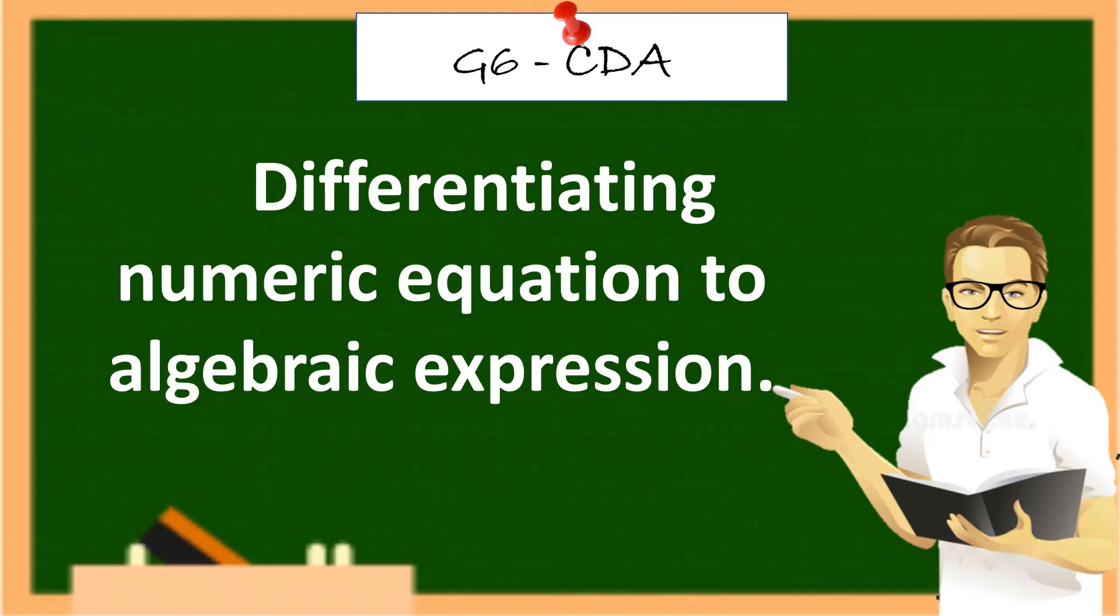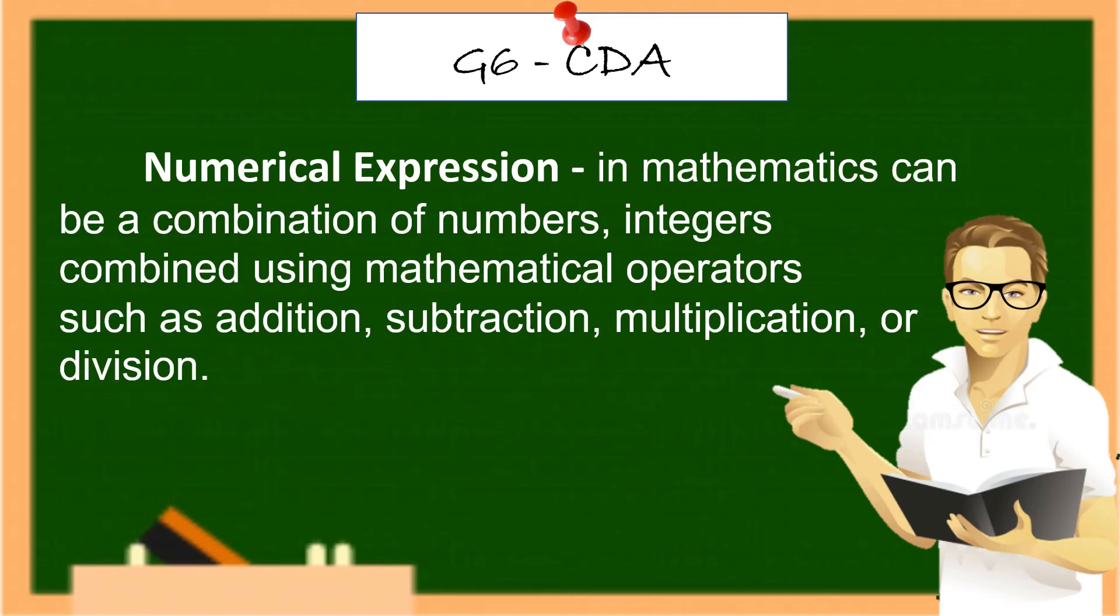Differentiating Numeric Equation to Algebraic Expression. So, numerical expression in mathematics can be a combination of numbers, integers, combined using mathematical operators such as addition, subtraction, multiplication, or division. Example, 5 plus 7 minus 3 times 2 is an expression. You can solve this using PEMDAS rule.